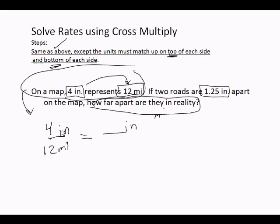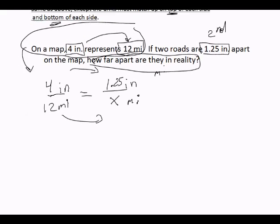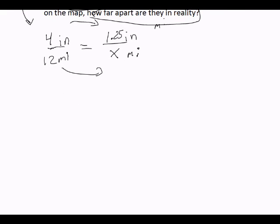Remember here, we have to have the same units. So if I have inches on top on the problem across the ways, I have to have inches on top. I have miles on the bottom, so I have to have miles on the bottom. If the roads are 1.25 inches, this is the second fraction. The question is, how far are they apart in real life? That's the x, the number of miles. Once you have inches on top, inches on top, miles on the bottom, miles on the bottom, as long as the units are the same on both sides of the fraction, we can cross multiply.